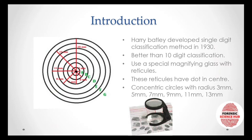This technique was developed by Harry Batley — there's a double 't' in Batley — and it was developed in the year 1930. This classification is better than the 10-digit classification given by Henry, because the 10-digit classification required all prints present on all 10 fingers.